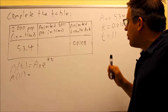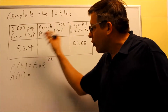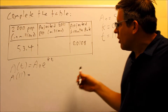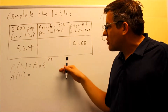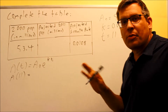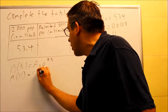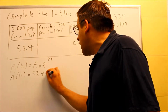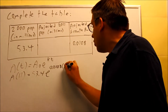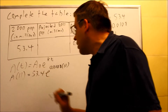My A(0) is 53.4. Notice, even though it says in millions, I don't need to worry about converting that — if I just use 53.4, whatever answer I get is automatically going to be in terms of millions as well. So I'm going to put in 53.4 as is, with e to the k = 0.0108, and time t = 11 years.